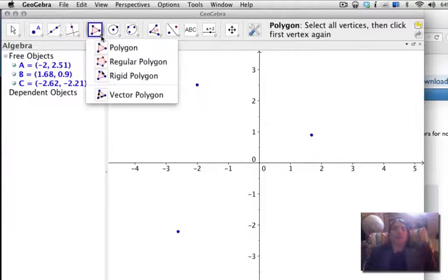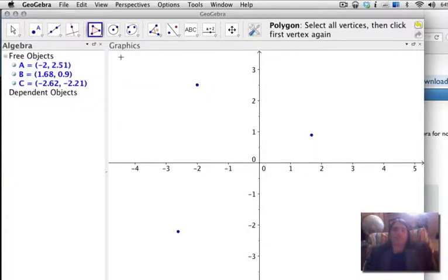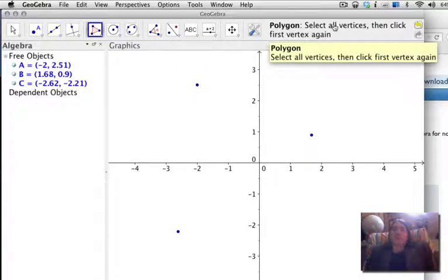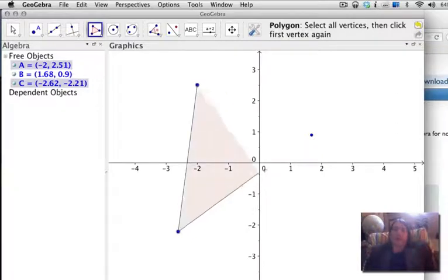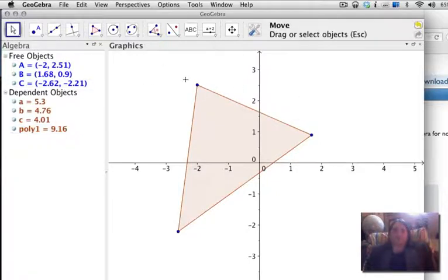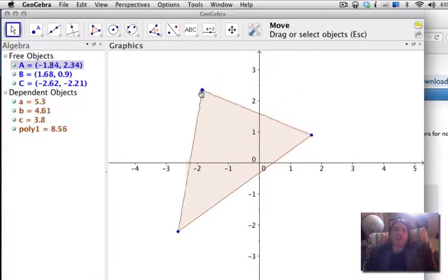I'm going to now create a triangle that connects these three points together. So I pick the Polygon tool. Notice that it gives me some hints on how to use the tool. It says select all vertices and click the first vertex again. So I'm going to click on the vertices in order, and then go back to the first one again. That creates a polygon called Poly 1. These are the different sides of the triangle. Notice when I hover over them, you'll see that the shading gets darker. And as I drag points on my triangle, notice that the area of the triangle and the lengths of the sides all change.